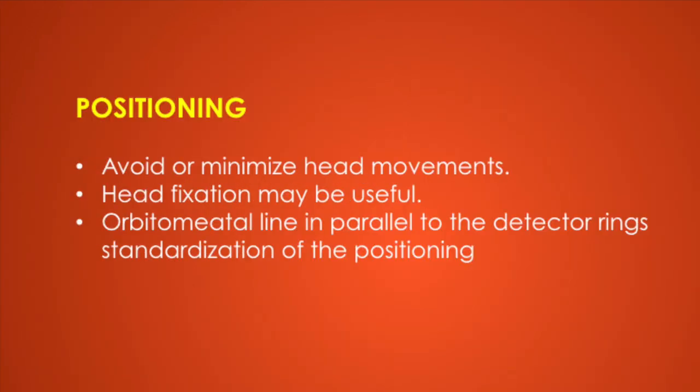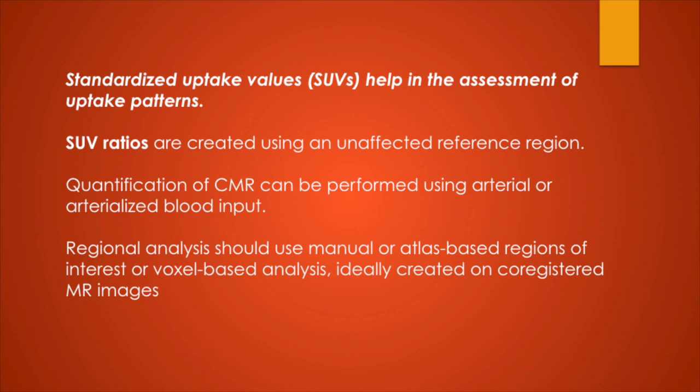Coming to positioning, it is the same as a CT brain and the important thing is to avoid or minimize head movements. Head fixation may be useful, with the bitumatal line parallel to the detector rings, and standardization of positioning can be done. For quantification, we use standardized uptake values — the SUV value — which help in assessment of uptake patterns. SUV ratios are created using an unaffected reference region. Quantification of CMR can be performed using arterial or arterialized blood input, and regional analysis should use manual or atlas-based regions of interest or voxel-based analysis, ideally co-registered with MR images.